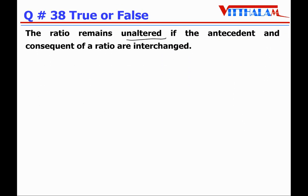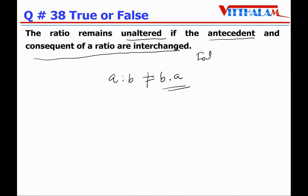Question 38: The ratio remains unaltered if the antecedent and consequent of a ratio are interchanged — it's False. a:b is not the same as b:a. The order of the terms is very important in a ratio; we cannot interchange them. For example, 3:2 equals 3/2, which is not equal to 2/3.